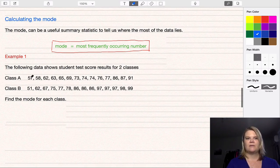So in the example we have the two classes, Class A and Class B, with student test score results for each class.